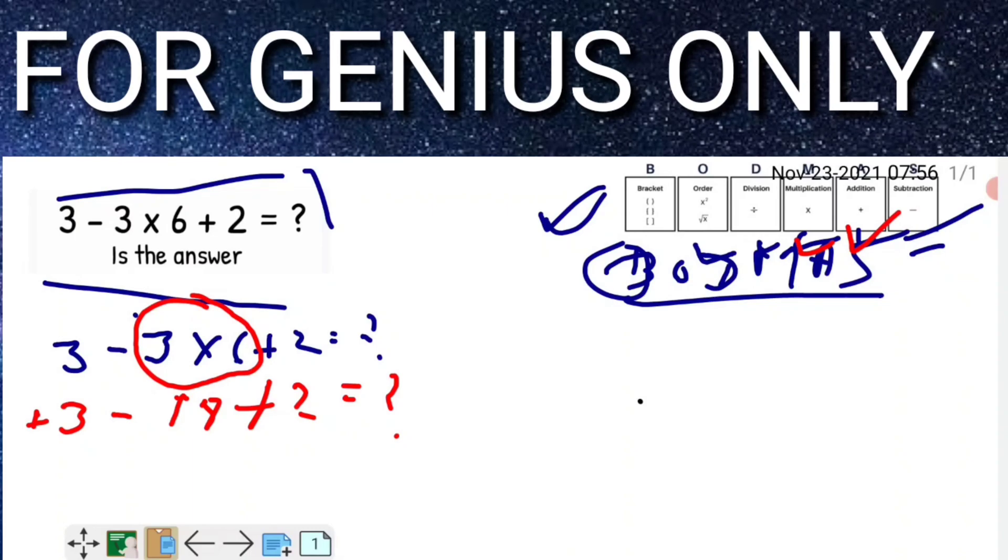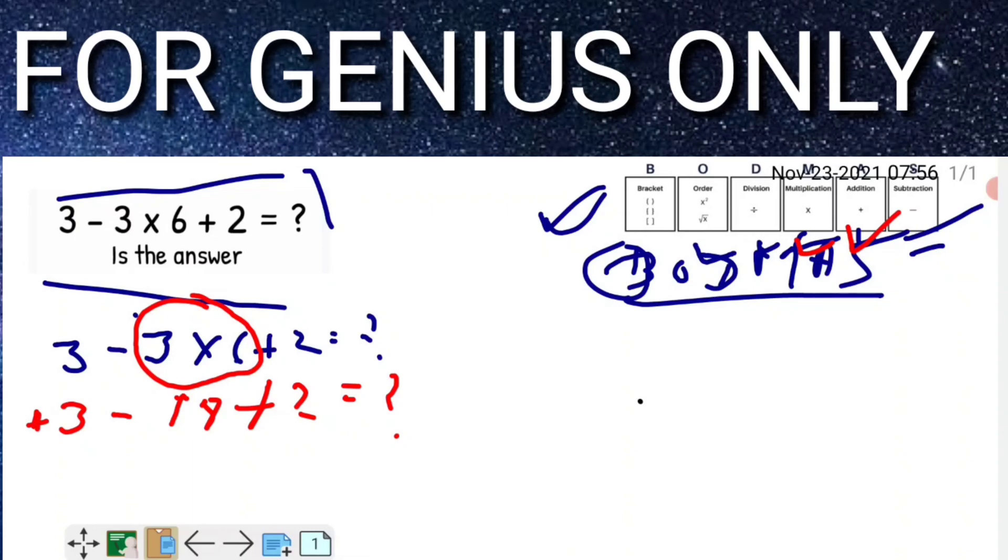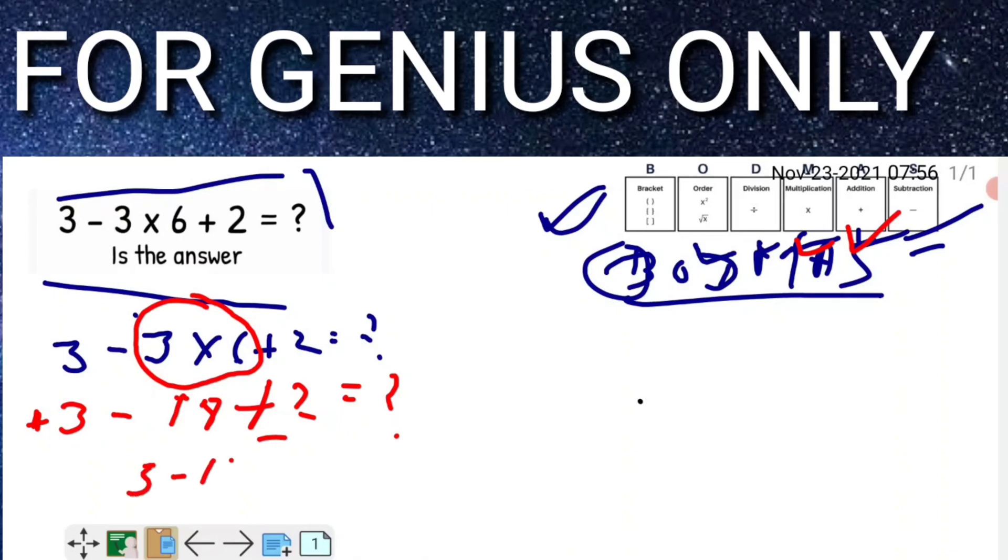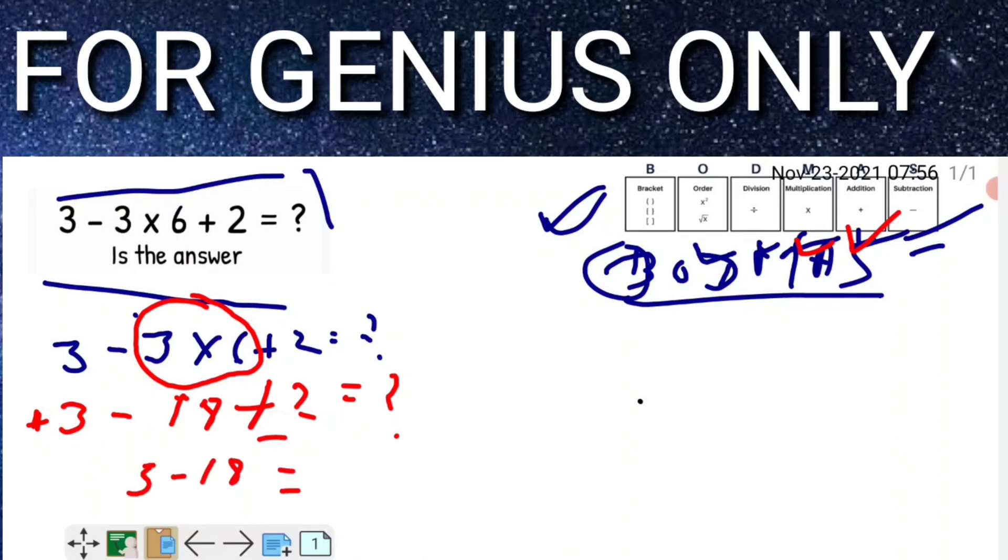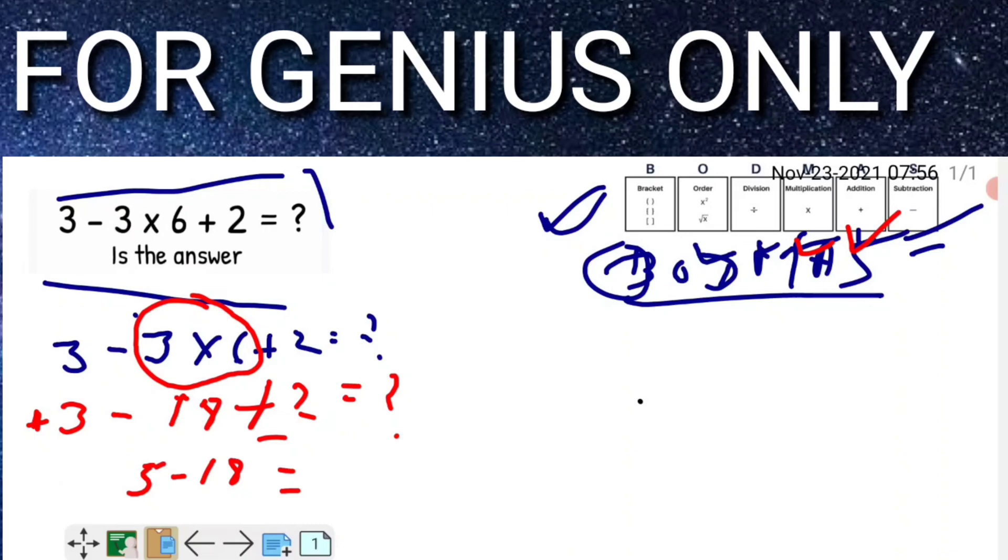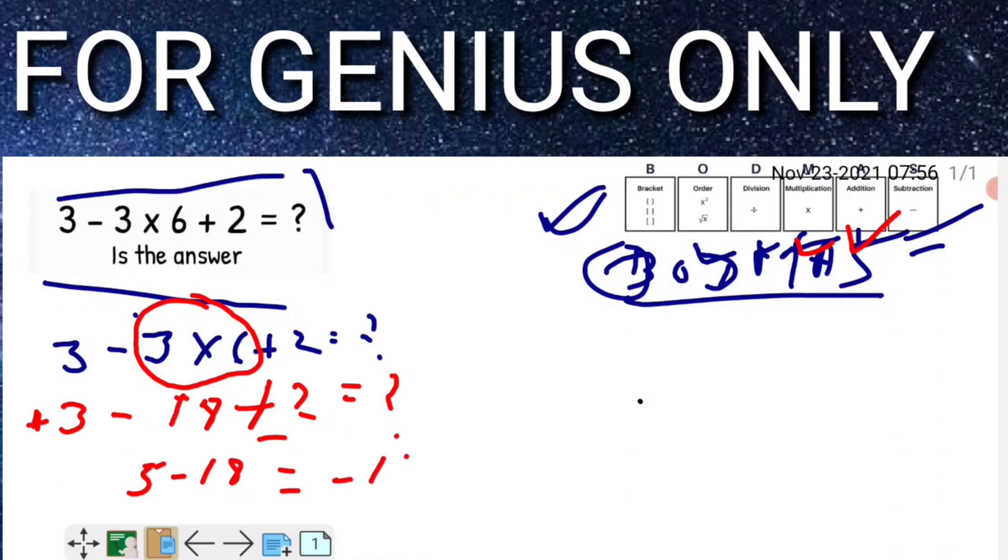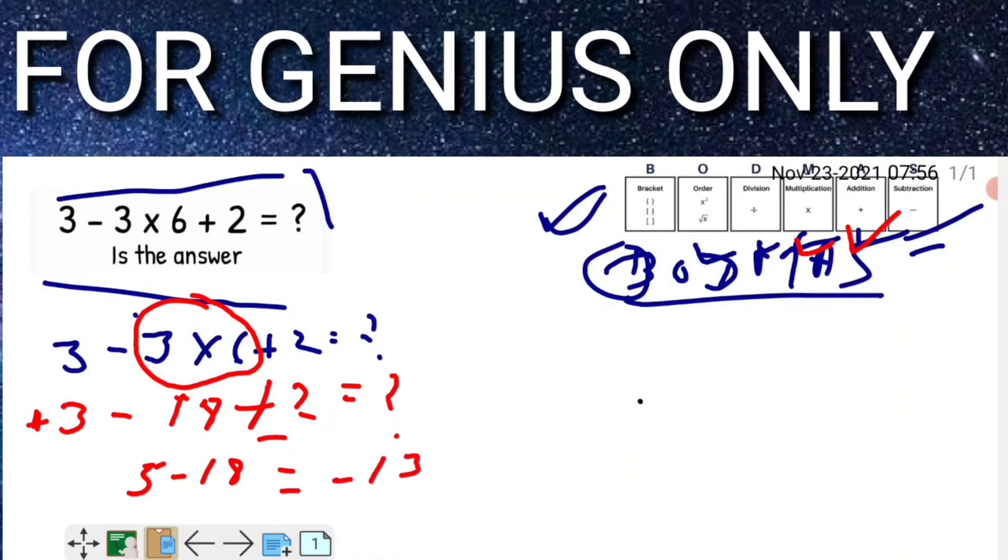And - 18. What will the answer be? If 18 is deducted from 5, it will come to - 13. The exact answer to this question is - 13.